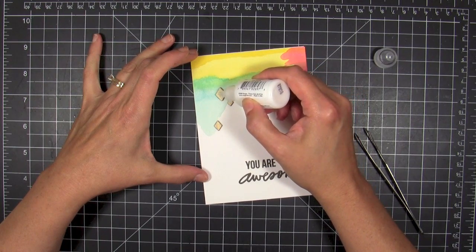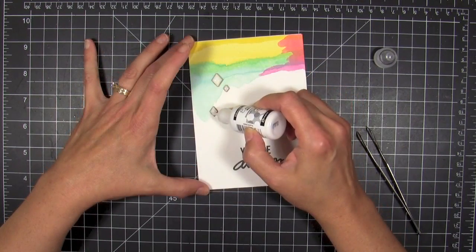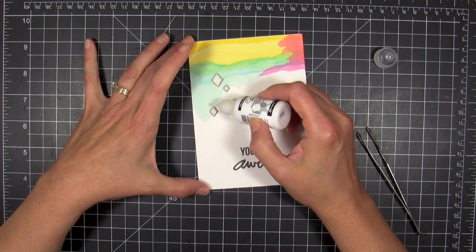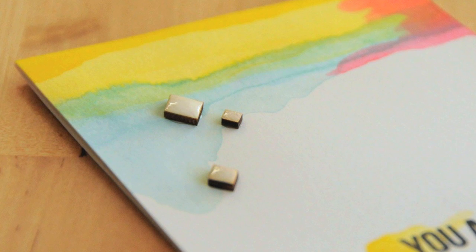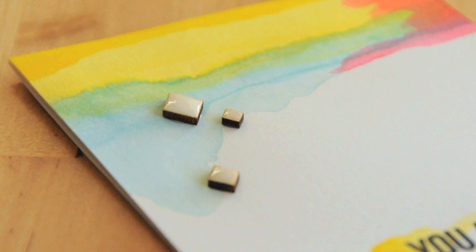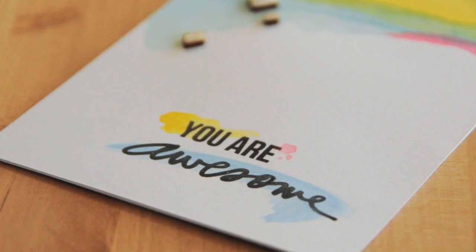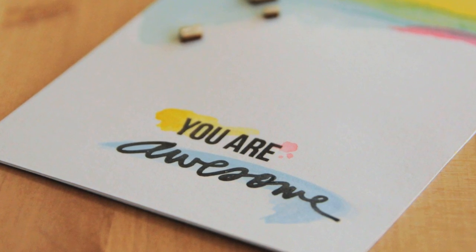I thought it would be fun to give them some added emphasis by using this enamel, also by Ranger. This is a white enamel finish, kind of like glossy accents but white. It goes on nicely right from the tube.